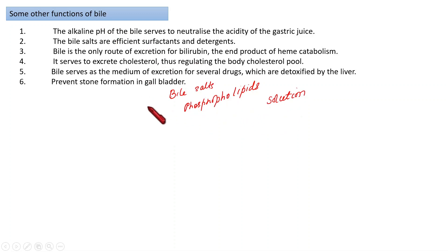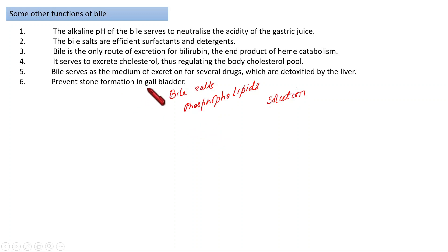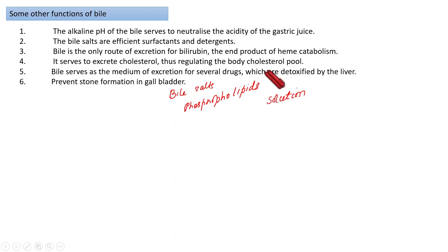Situations that lead to gallstone formation include gallbladder infection and excessive dehydration, which can escalate cholesterol levels and lead to gallstone development. Whatever the situation, bile salts and phospholipids play a major leading role in maintaining normal cholesterol levels by keeping cholesterol in solution form.